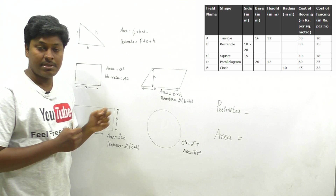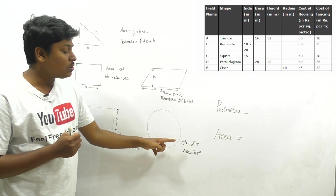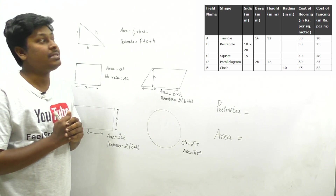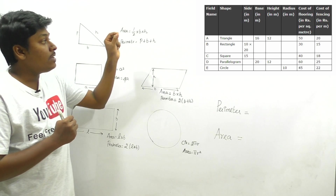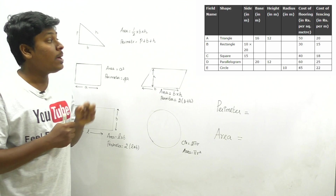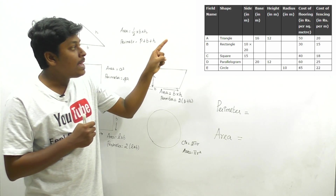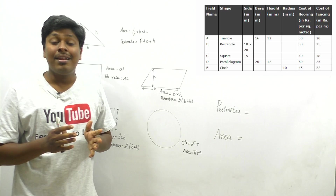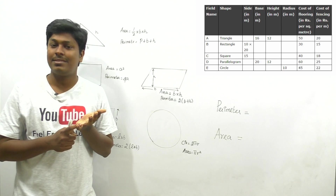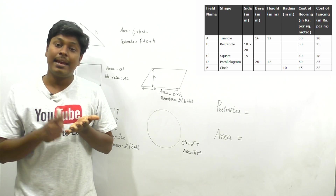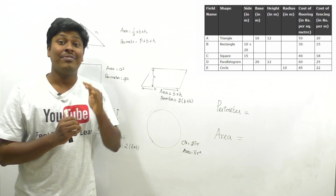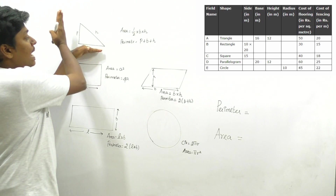For a circle we know that circumference is 2πr and area is πr². For field A, which is in the form of a triangle, the values given are base = 16 and height = 12. But remember, there are many types of triangles — isosceles, equilateral, scalene — so we need to properly identify which triangle is given.